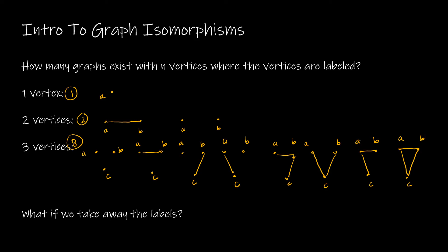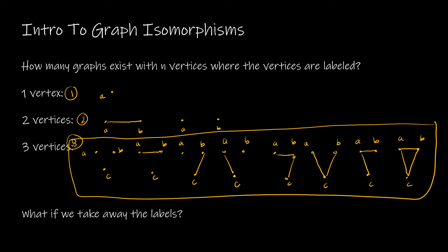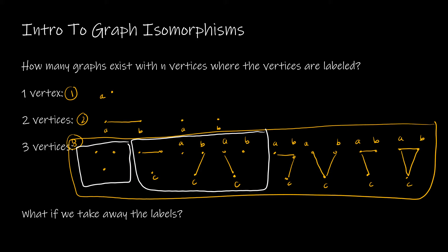We could talk about the generalization of how many labeled graphs there are, but the point of this exercise is to say there's one, two, eight. Now let's look specifically at these three vertices. What if I decided to take away the labels? Looking at this section of three graphs, if I take away the labels, do you see how these three are the same? I have three vertices and just one edge, with two vertices of degree one and one vertex of degree zero. That's the same for all three of those graphs.